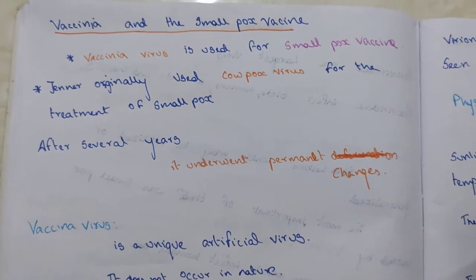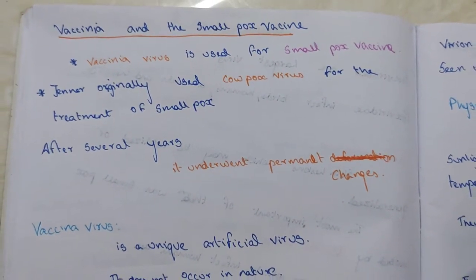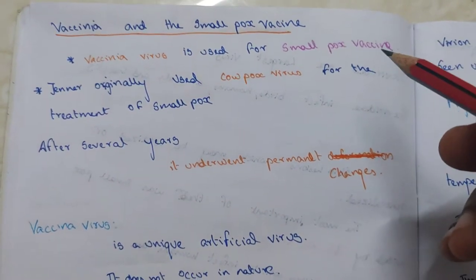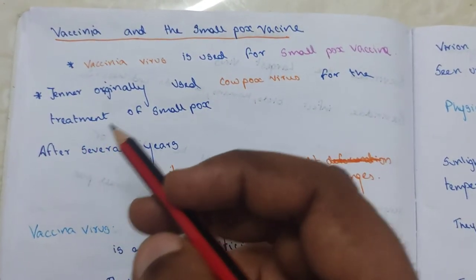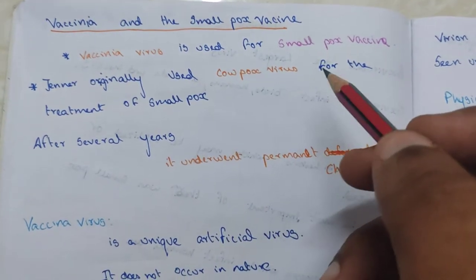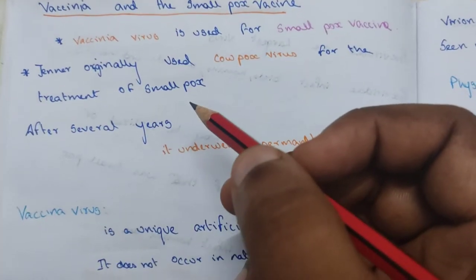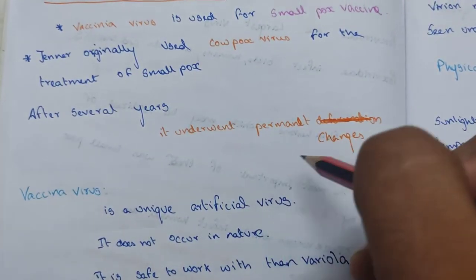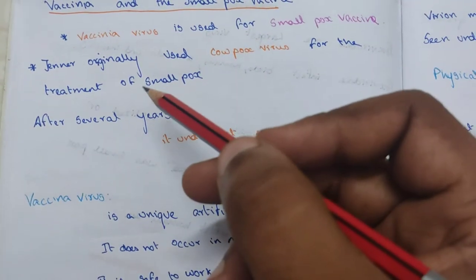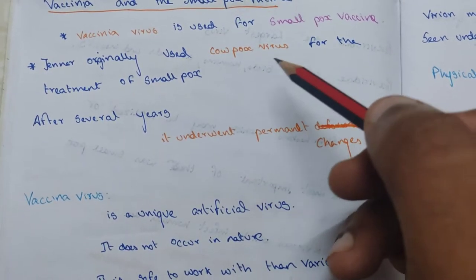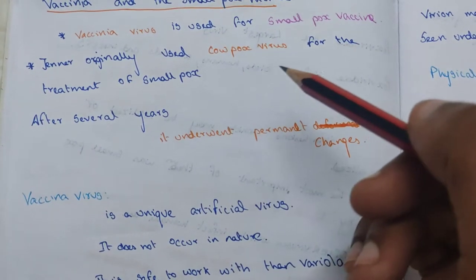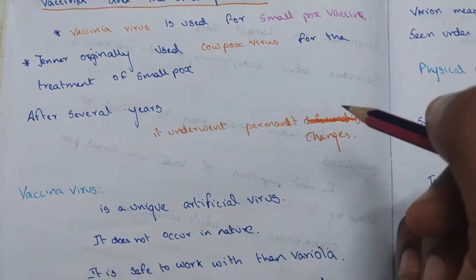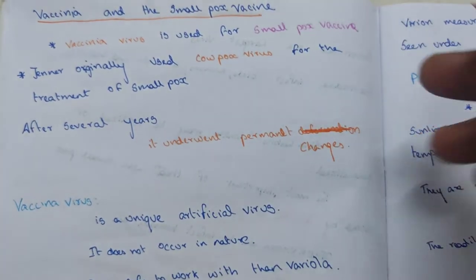Vaccinia virus is used for the smallpox vaccine. Edward Jenner originally used cowpox virus for the treatment of smallpox. After several years, the cowpox virus underwent permanent changes, and now vaccinia virus is used instead.